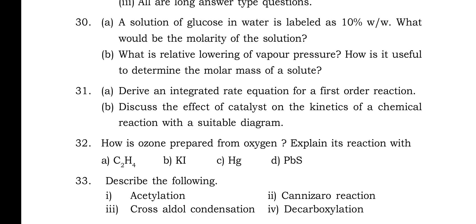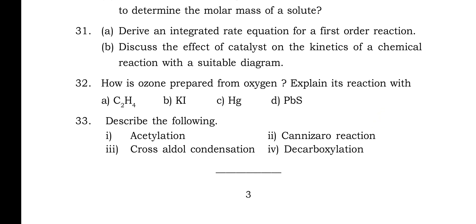The next question is Question 32: How is ozone prepared from oxygen? Explain its reaction with (a) C2H4, (b) KI, (c) Hg, (d) PbS. And the last question in this section is Question 33: Describe the following: first one is acetylation, second one is Cannizzaro reaction, third one is cross aldol condensation, and fourth one is decarboxylation.